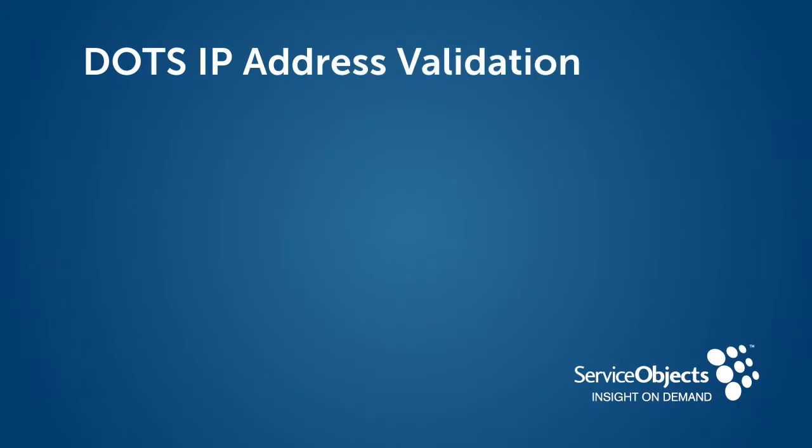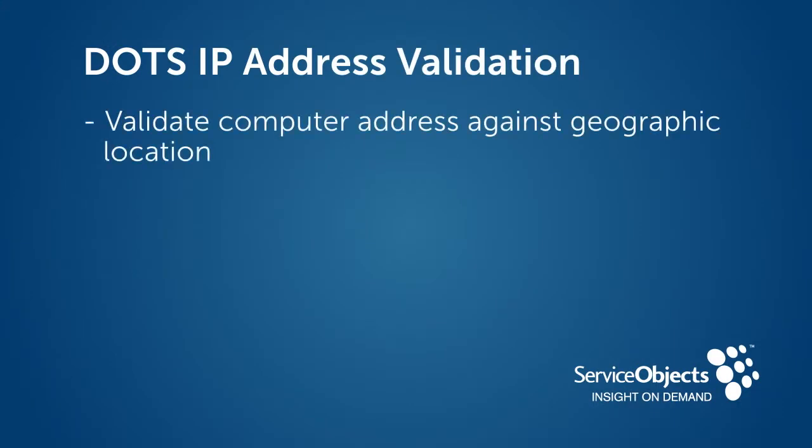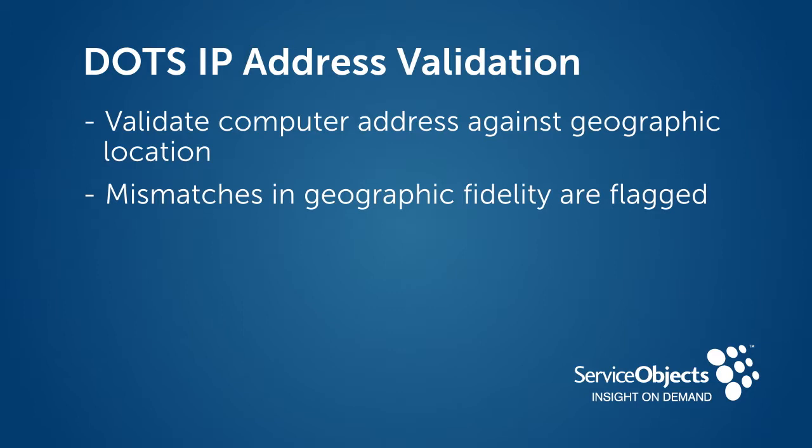When it comes to geolocation, DOTS IP Address Validation allows online marketers to validate a computer address against the geographic location of the online visitor with high accuracy. Mismatches in geographic fidelity are flagged, often indicating a bad lead. For example, if a computer's IP address is in the Ukraine yet the visitor typed in an address in California, the likelihood of that lead being bogus is very high.